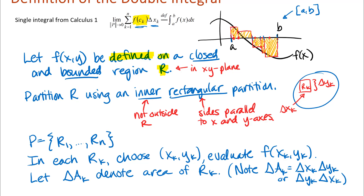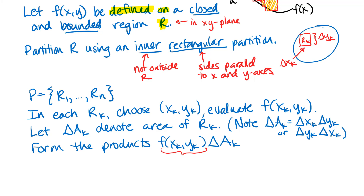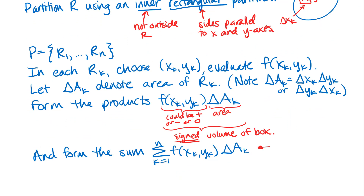Just like in the single integral, we take function output times size of piece, add them all up, and take the limit as the norm of the partition approaches zero. We could have negative outputs here, so this product represents a signed volume of a box — not just volume, since volume cannot be negative. The sum of these products is the Riemann sum, which is what we built with the Lego sculpture.